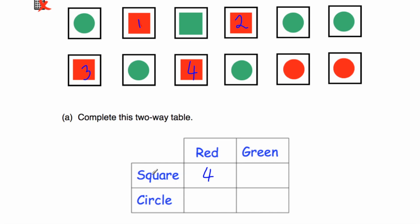In terms of the green squares, we've got one of those. Next, the red circles — we've got two of those. And finally the green circles — we've got five green circles. Let's check we had 12 cards: four plus one is five, plus five is ten, plus two is twelve. So we've got 12 inside our two-way table. We've completed our two-way table.